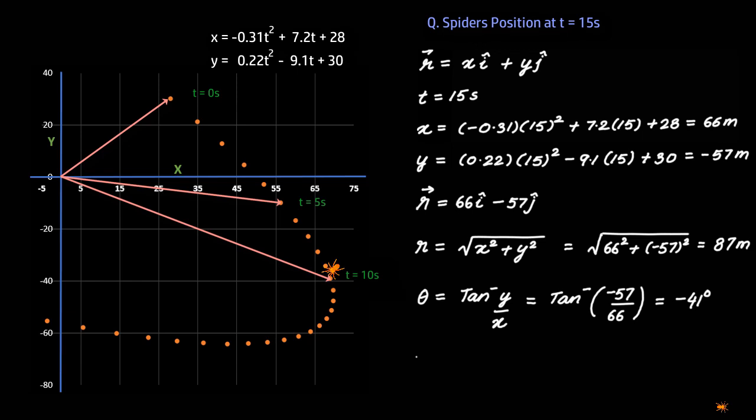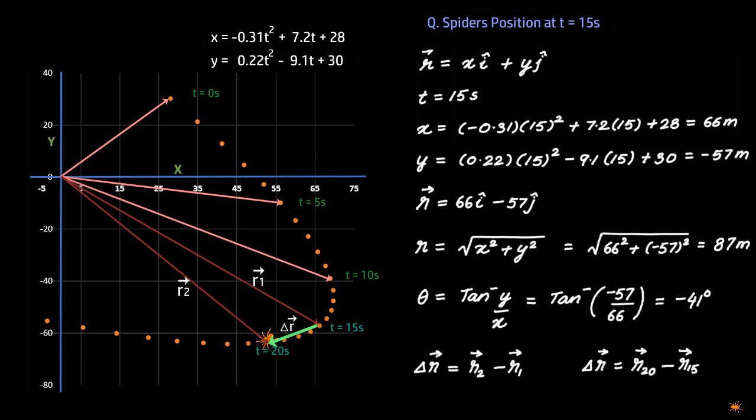Or you could find the displacement between any two times, say t1 and t2, by subtracting the position vector at time t2 from position vector at time t1. So if you ask, what is the displacement between t = 15 seconds and t = 20 seconds, you will say that Δr = r₂₀ - r₁₅. We can say that r₂₀ is this, and we know r₁₅, so the displacement equals this.